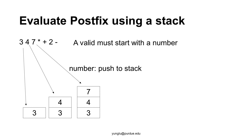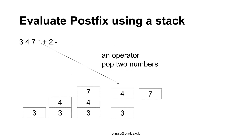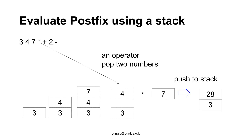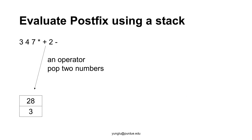Consider this example: 3, 4, 7, multiplication, plus, 2, minus. To evaluate a postfix expression, when we see numbers, they are pushed to a stack. Number 3 is at the bottom, number 4 is in the middle, and number 7 is at the top. When an operator is encountered, the program pops the top two numbers — 4 and 7 — because this is a binary operation. The operator is multiplication, so the result is 28, which is pushed back to the top of the stack. The stack now has 28 at the top and 3 at the bottom.